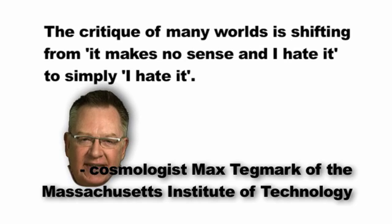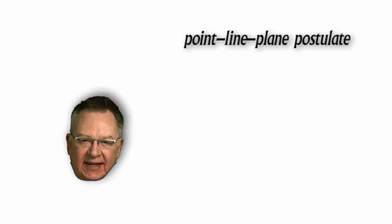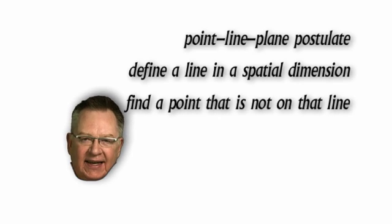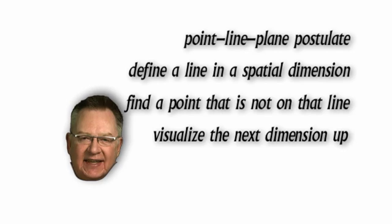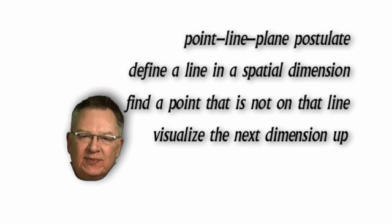Here's the intuitive leap my project takes on all this. If there are multiple branching timeline versions of our universe being created by chance, choice, and the actions of others, and yet we somehow can't get to those other universes once a certain outcome has been observed — we're talking about the point-line-plane postulate again. We define a line in a spatial dimension and we find a point that is not on that line, and that's how we visualize the next dimension up. I'm contending that the versions of our universe that we can't get to are being defined within additional dimensions, and this aligns with the most basic definition of spatial dimensions.